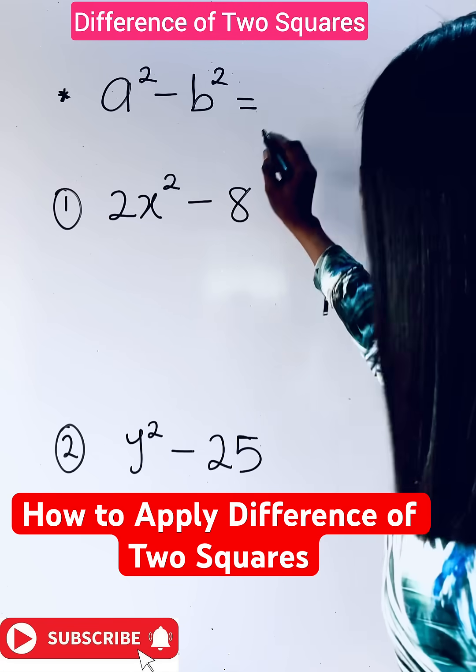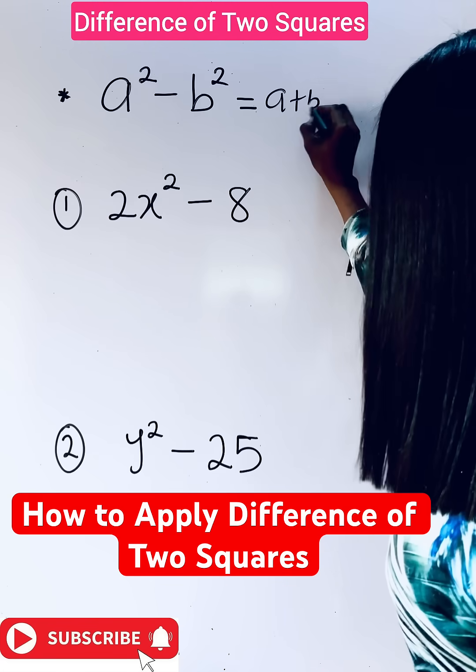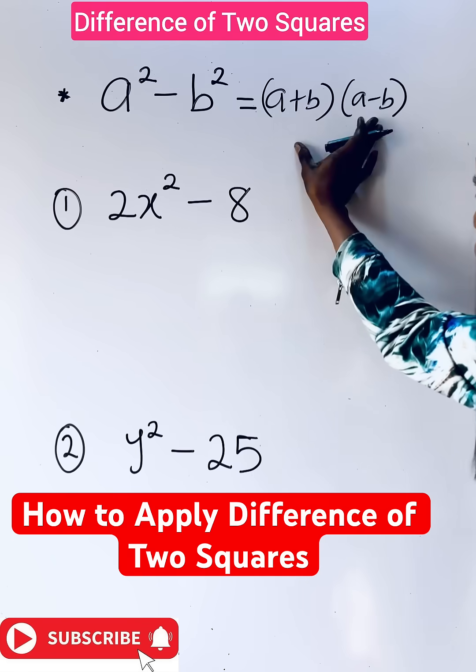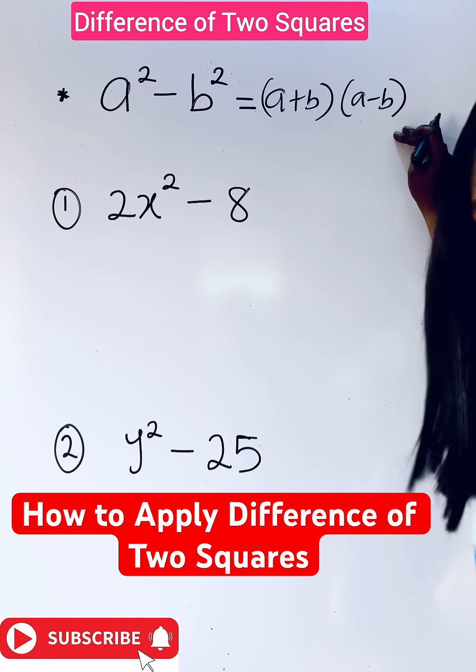When you see this, what you do is a plus b, then a minus b. We call this difference of two squared formula.